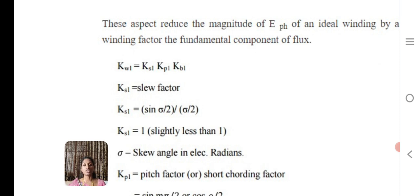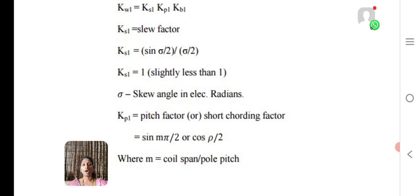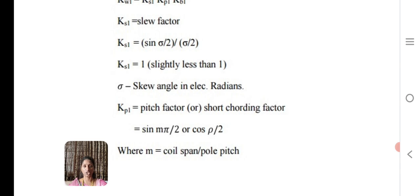Ks1 which is skew factor, the formula is sin rho by 2 divided by rho by 2. Ks1 will be almost equal to 1. K pitch factor Kp1, also called as short chording factor, the formula for this is either cos rho by 2 or sin m pi by 2, where m is coil span per pole pitch.